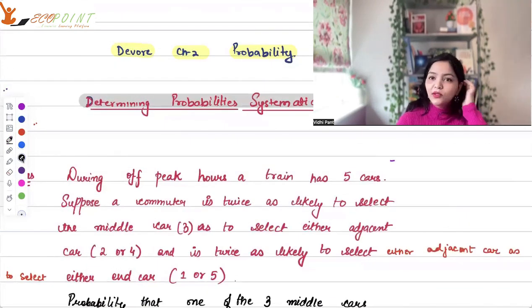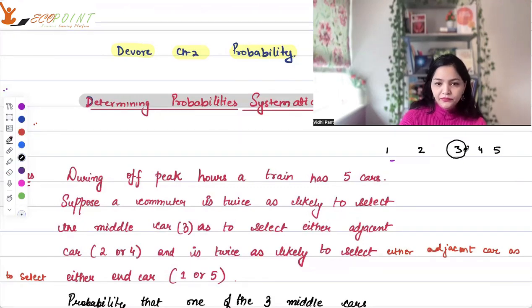In order to understand the concept of determining probabilities, let me start off with an example. During off-peak hours, a train, a commuter train has five cars. Suppose a commuter is twice as likely to select the middle car. So you have five cars. So one, two, three, four, five. These are the five cars in sequence. So the middle car turns out to be the third one. This person is twice as likely to select the middle car as to select either adjacent cars. Adjacent cars would be two, four. And is twice as likely to select either of the adjacent cars as to select either end cars. End cars are one and five.